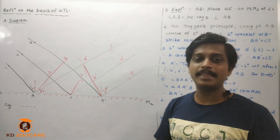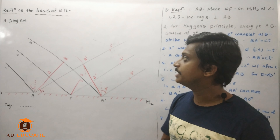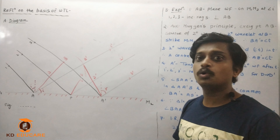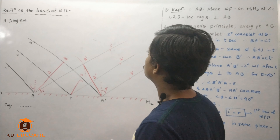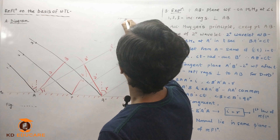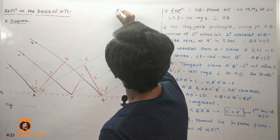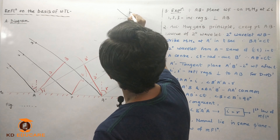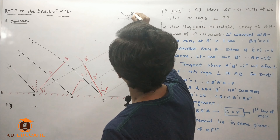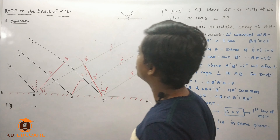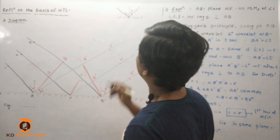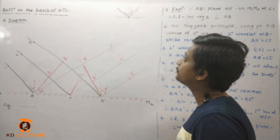Let us discuss the next concept: reflection on the basis of wave theory of light. Earlier in ray optics, you have seen reflection — you have a plane mirror, an incident ray, a normal, angle of incidence, and angle of reflection. The incident ray, reflected ray, and normal lie in the same plane. This you have seen in ray optics.